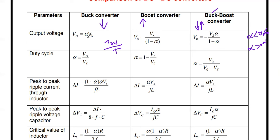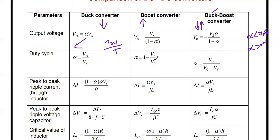From the output voltage equations, we can rearrange to get the duty cycle. For the buck converter: α = V0 / Vs, which is the ratio of output voltage to input voltage. For the boost converter: α = 1 − Vs / V0. For the buck-boost converter: α = V0 / (V0 − Vs). These are the duty cycle formulas for all three converters.